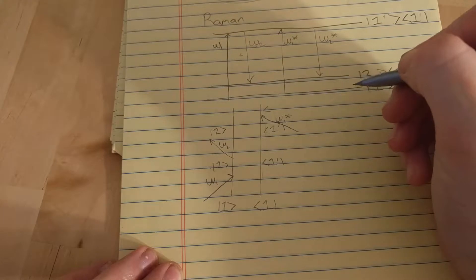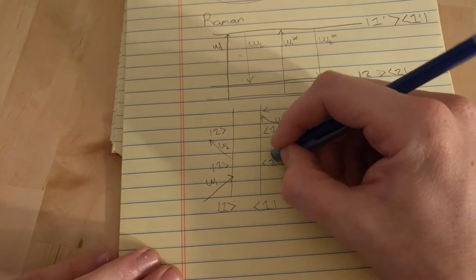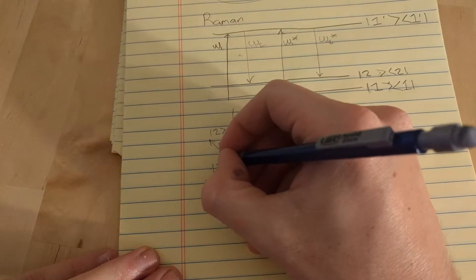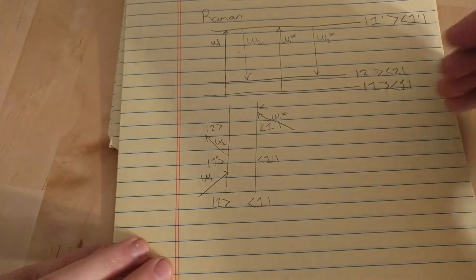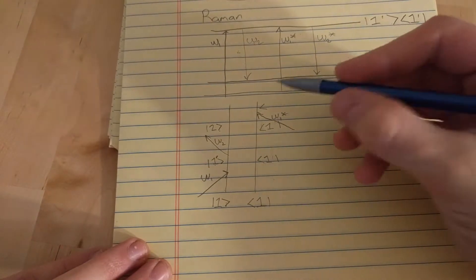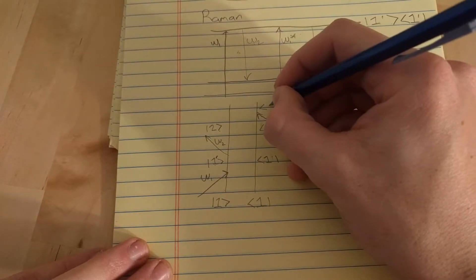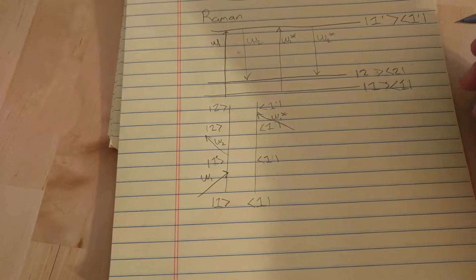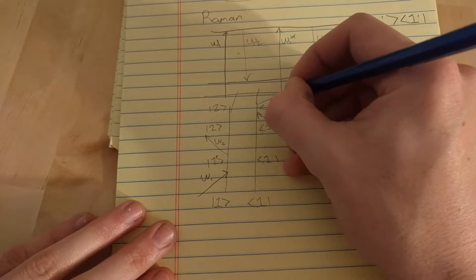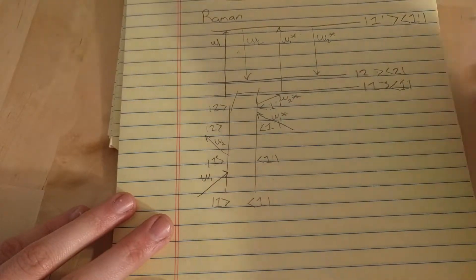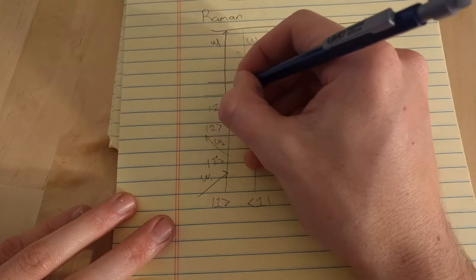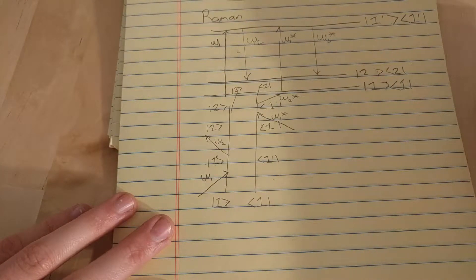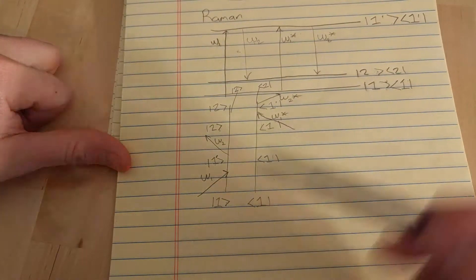After the Omega one star interaction, this side is in one prime and this side is in state two. Sorry about that correction — one prime is here on the bra side. And finally the last interaction is Omega two star going out. So that's the process of Raman.